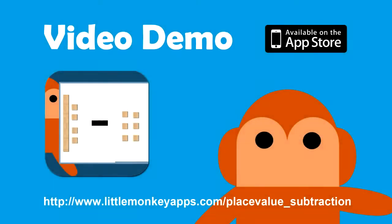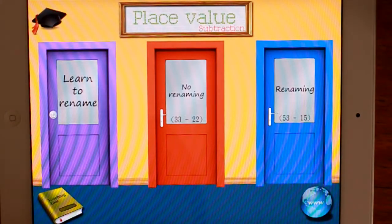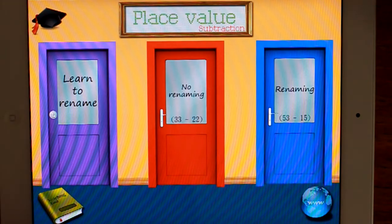Today we're going to have a look at MAB Subtraction. It's the third in the series on place value using MAB.